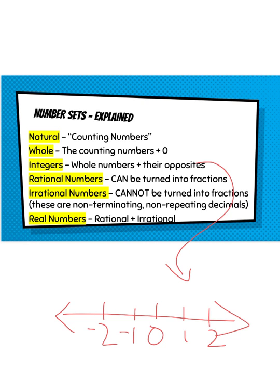All right then rational numbers are anything that can be turned into a fraction. Conversely irrational numbers cannot be turned into fractions. Those are the ones that are decimals that are non-terminating, meaning they never end, and there's no repeating. And then of course our real numbers are both the rational and the irrational together.